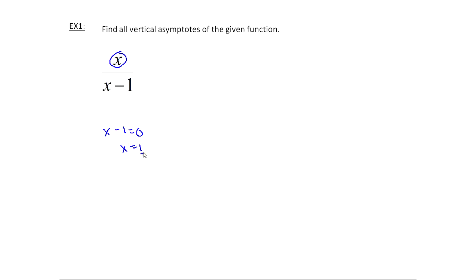And I say, what about the numerator? Well, the numerator is x. So when x equals one, x is one. So in this case, at x equals one, the denominator is zero, the numerator is non-zero. So that means that we have a vertical asymptote at x equals one.